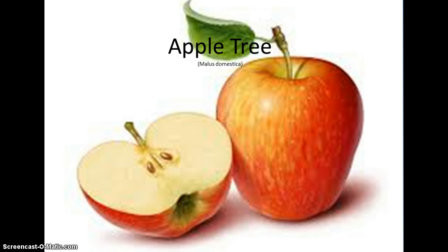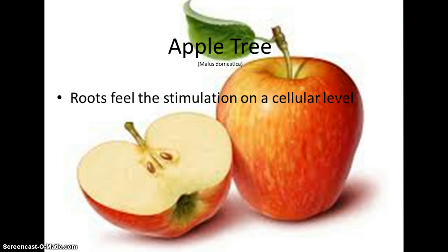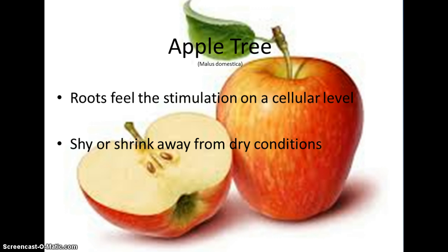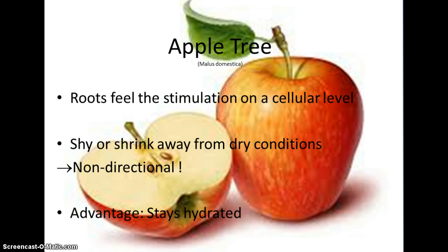Apple trees, like most other plants, have a positive hydrotropism, so their roots grow towards water. They sense the stimulation on a cellular level, which makes them grow faster, or lets them shrink away in dry conditions, but it is not a directional response. The advantage of this phenomenon is very basic and probably the most important: this way they stay hydrated.